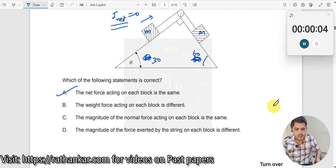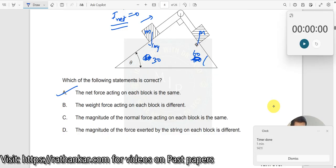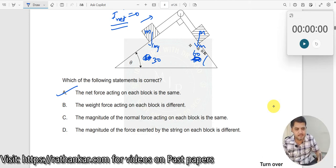If you want to look at the other ones, the weight force acting on each block is different. What is weight force? Mg here. This is Mg. This is Mg. Mg is same, right? Because same masses. So it is same. So it is incorrect.